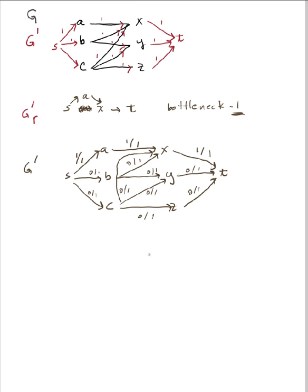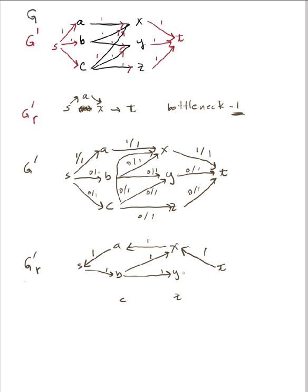Next step is to draw my residual graph for this graph. From S to A, there's nothing more I can push forward, but I could undo 1 unit of flow. From A to X, ditto — undo 1 unit of flow. X to T, ditto. S to B, I can go forward with 1 unit. B to X, I can go forward with 1 unit. B to Y, forward. Y to T, forward. S to C, forward 1 unit. C to X, forward 1 unit. C to Y, forward 1 unit. C to Z, forward 1 unit. And Z to T, forward 1 unit.